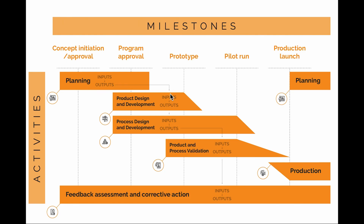This process then produces outputs that become the inputs of the next phase. The outputs address what the design should achieve, what kinds of parts we'll have, what kinds of processes will be needed, what will be special — and a quality assurance plan to make sure we hit all the important characteristics the customer wants, along with management support for approval.